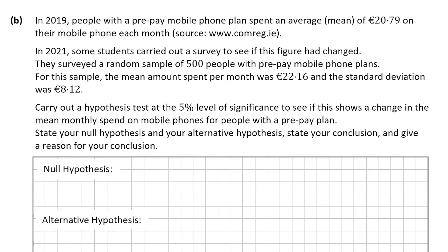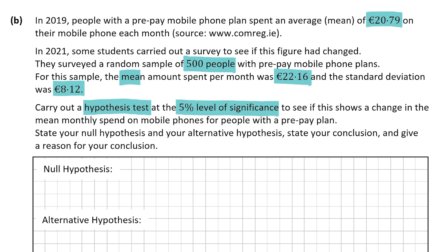In question B, we're told that in 2019 people with a prepay mobile phone plan spent a mean of €20.79 per month. In 2021, students surveyed a random sample of 500 people and found the mean amount spent was €22.16 with a standard deviation of €8.12. We're asked to carry out a hypothesis test at the 5% level of significance to see if there has been a change in mean monthly spend, stating the null and alternative hypotheses, conclusion, and reason.